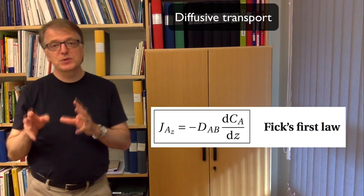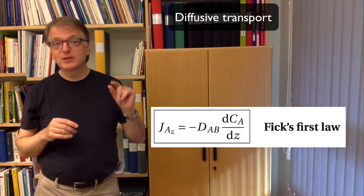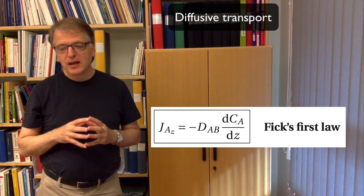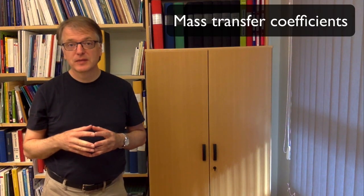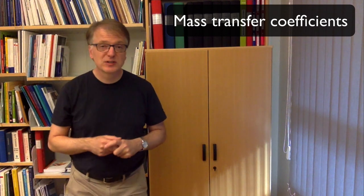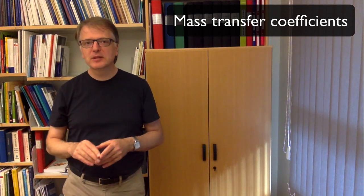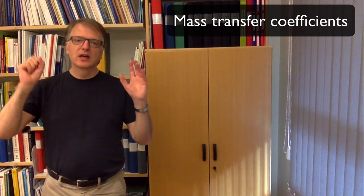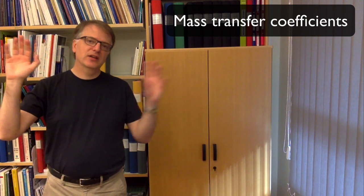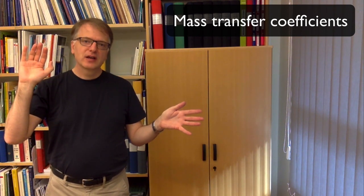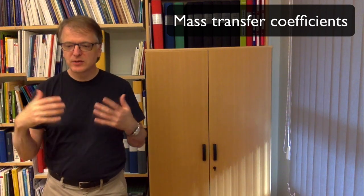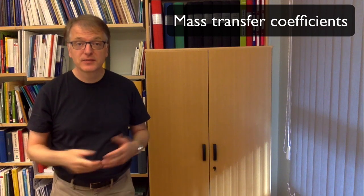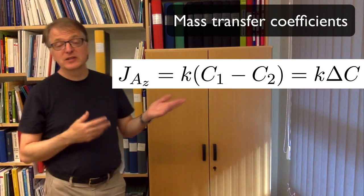So to use diffusivity, you need to know something about that distance. Another way to express this is to use mass transfer coefficients. When you use mass transfer coefficients, you don't really care exactly what happens. You just measure things and say, okay, if I have this concentration here and that concentration there, how fast are things being transported? And then you determine your mass transfer coefficient k, and you get an equation like this.